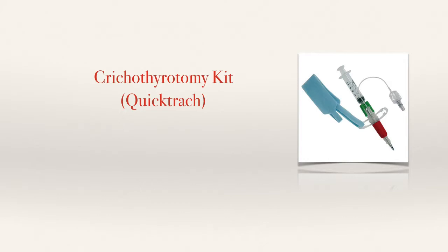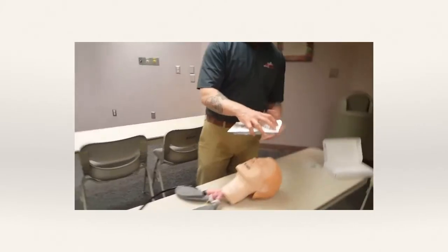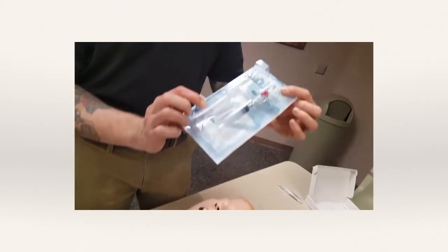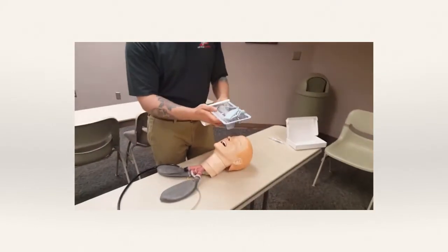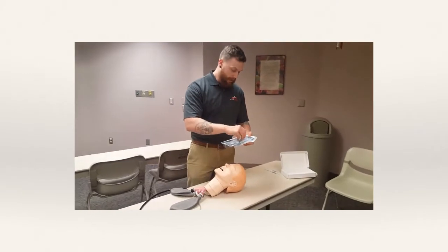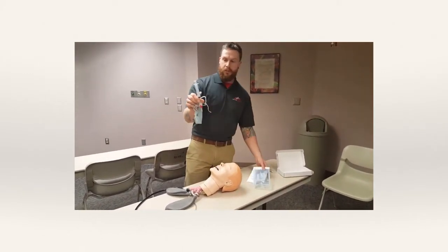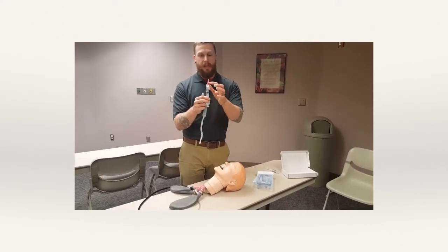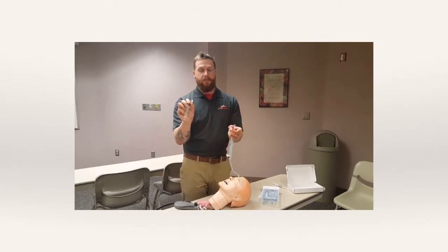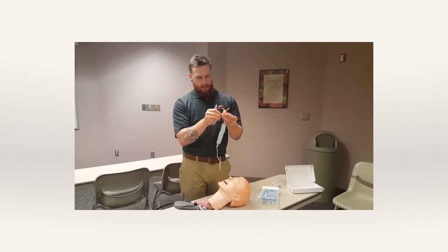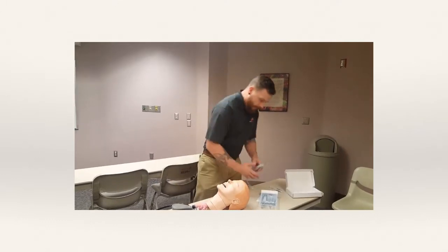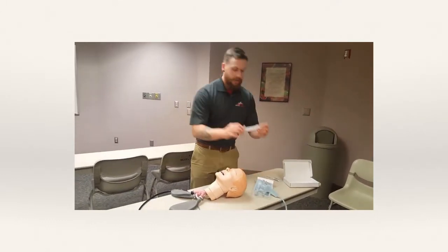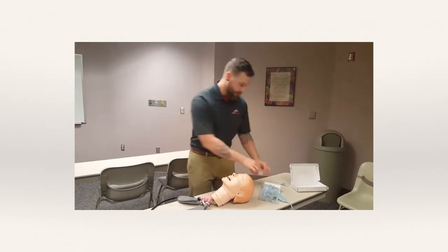The kit comes with everything you need to do the procedure. Inside you'll have the actual syringe attached to the QuickTrach, a little plastic stop device, and a 14-gauge introducer needle that comes pre-inserted into it. It also comes with a flexible extension that you'll put on afterwards.